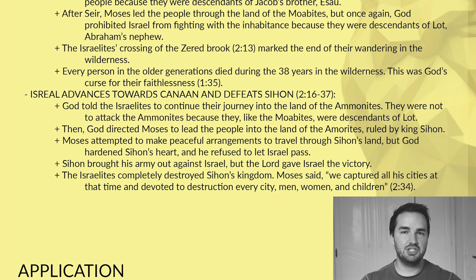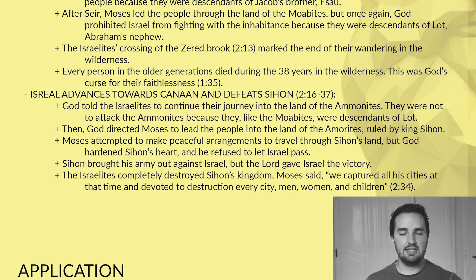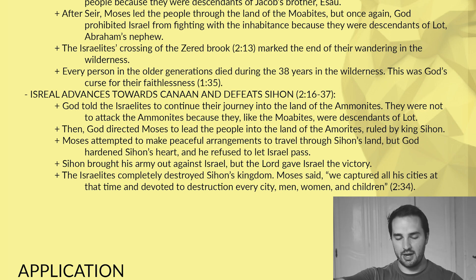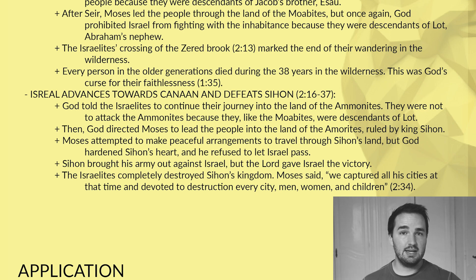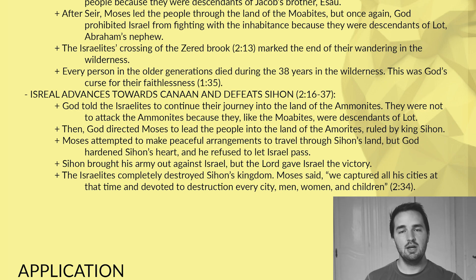Our second section, verses 16 through 37, I've entitled 'Israel Advances Towards Canaan and Defeats King Sihon.' God told the Israelites to continue on their journey towards the land of the Ammonites; however, once again they were not to fight with the Ammonites because they too were relatives of Lot. Then God directed Moses to lead the people into the land of the Amorites, ruled by King Sihon. Moses made an attempt to make peaceful arrangements with King Sihon to pass through his land, but the text tells us that God hardened the heart of Sihon and he refused to let Israel pass. Sihon actually brought his army out against Israel, but the Lord gave the Israelites the victory and they defeated Sihon.